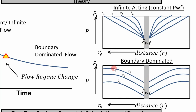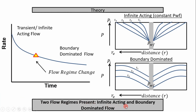As reservoir pressure declines, the well flowing pressure also has a tendency to decline — there's less energy pushing things to surface. In boundary dominated flow, we do not have constant bottom hole pressure. This is for radial flow conditions — radial flow is the key assumption. So we have two flow regimes: infinite acting and boundary dominated flow. Specifically we're talking about infinite acting radial flow, which assumes the well is draining a cylindrical area.